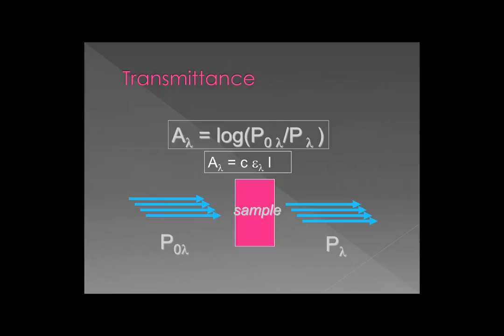We need to start our discussion by first making sure we're on the same page, so we're going to review what we actually want to measure. Ideally we really want two pieces of information: qualitative information on the wavelength ranges of light that my analyte absorbs, as this provides information on its electronic structure; and information on how much light it absorbs, so I can use that to quantitate my analyte.